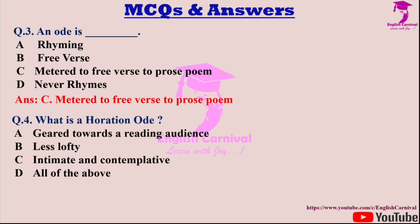Question four: What is a Horatian ode? Options are A: Geared towards a reading audience; B: Less lofty; C: Intimate and contemplative; and D: All of the above. Correct answer is D — all of the above.